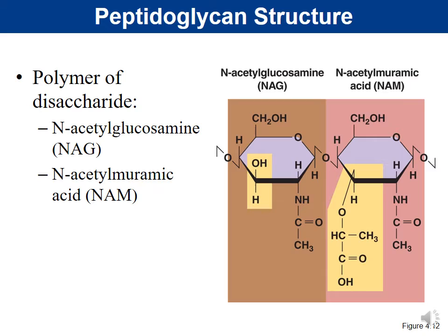Peptidoglycan is a polymer of a disaccharide — di means two sugars put together — and they repeat over and over again. The disaccharide is made of NAG and NAM. I'm not going to ask you what NAG and NAM stand for, but if you wanted to look it up, it's N-acetylglucosamine and N-acetylmuramic acid.